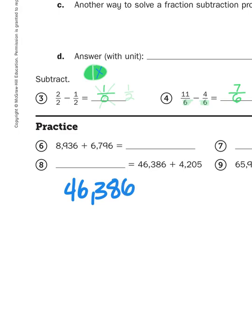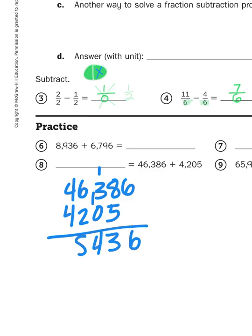46,386 plus 4,205. So I'm going to bring down the 6. 8 plus 5 is 13. Carry the 1. 4, there we go. 6 plus 2 is 8. And then 4 plus 4 is 8. My total is 88,436. No, it's not. Anybody see what I did there?